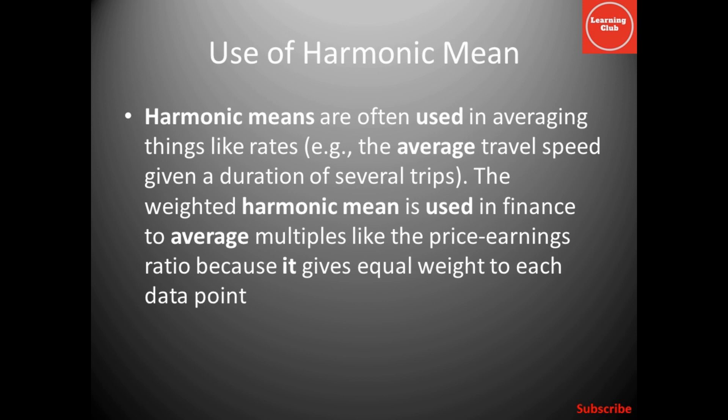Harmonic means are often used in averaging things like rates. For example, the average travel speed given a duration of several trips. The weighted harmonic mean is used in finance to average multiples like the price-earnings ratio because it gives equal weight to each data point. As we have discussed in geometric mean and arithmetic mean, when we use geometric mean, then we have to calculate rate of change. When we are comparing a value with itself, then we use geometric mean, and when we want to take average of rates of travel or speed, then we use harmonic mean.